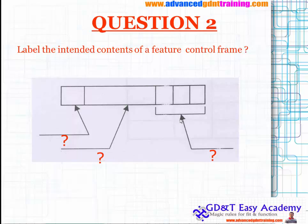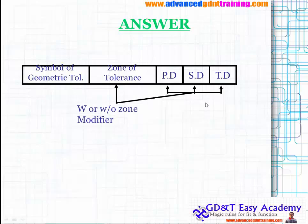Question two: for the feature control frame, the labeled content areas are the symbol of geometric tolerance, the zone of tolerance, primary datum, secondary datum, and tertiary datum.